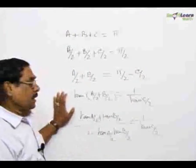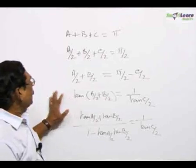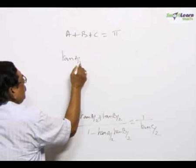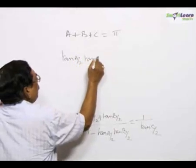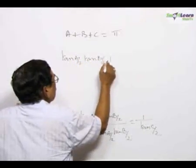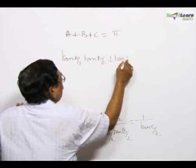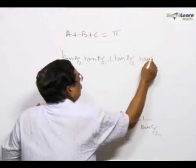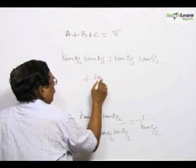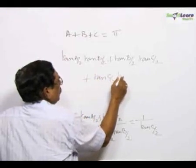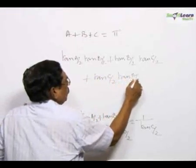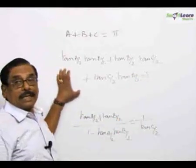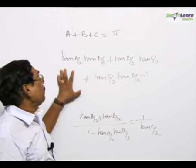As usual, I cross multiply and get the result as tan A by 2 into tan B by 2 plus tan B by 2 into tan C by 2 plus tan C by 2 into tan A by 2 is equal to 1. This I will prefer to call the third concept which you should remember.